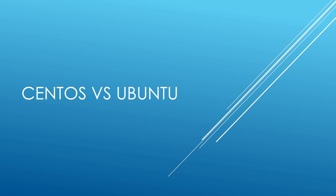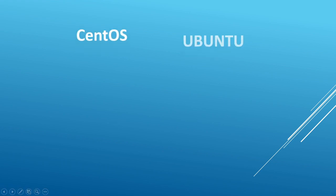CentOS and Ubuntu are the two most popular Linux distributions available in the market. The most common thing between both of them is that they are very powerful and can also be used in servers. We will try to find out how we can differentiate between these two distributions and which one to choose.